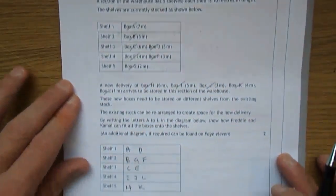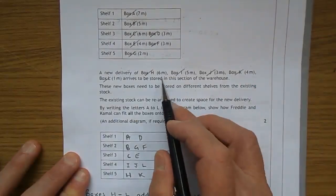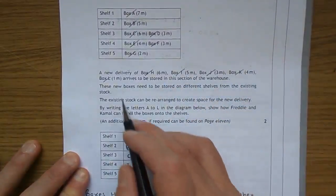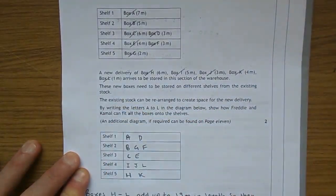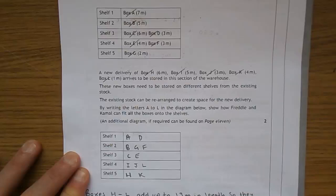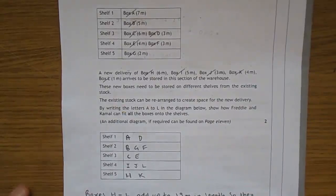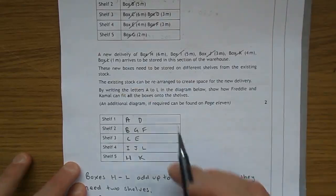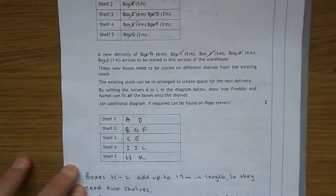A new delivery of box H which is 6 metres, I which is 5, J which is 3, K which is 4, and L which is 1, arrive to be stored in this section of the warehouse. These new boxes need to be stored on different shelves from the existing stock. The existing stock can be rearranged to create space for a new delivery by writing the letters A to L down below.